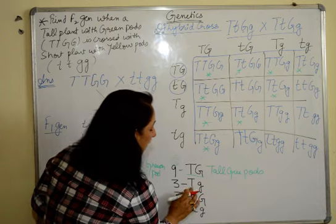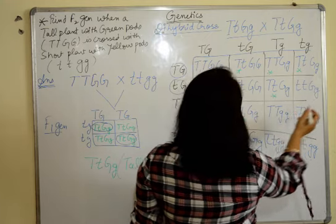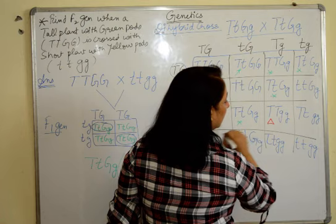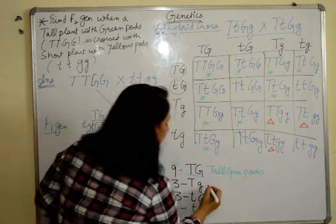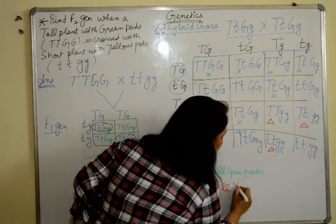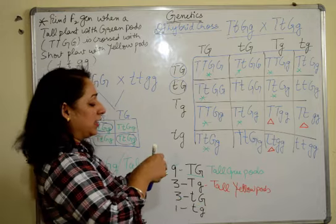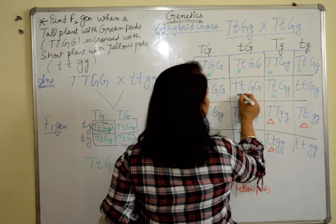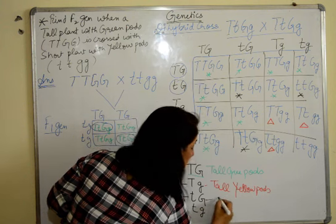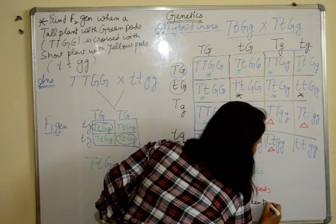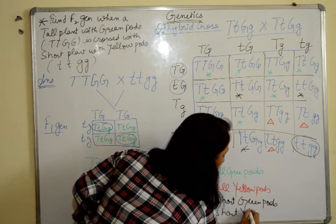We will take the other ones. So where capital T we have to see. G we don't have to see. So we'll start with capital T's. Only capital T. 1, 2 and 3. So 3 boxes where only capital T is present. That means the plant is tall but the pods are yellow. Next we have to see only capital G. We don't have to see the other allele. So this is 1, 2 and 3. So 3 are the ones where the plant is short but the pods are green. And we are only left with 1 here. That is a recessive trait where it is short with yellow pods.